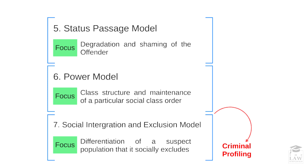The sixth model, the power model, is based on the class structure and maintaining a particular social class order. It must be noted that these models are not implemented in their entirety — it is not a literal implementation. These are just aspects of criminal justice processes that can be seen, and there might be instances where there is a mixture or amalgamation of each of these characteristics. The final model focuses heavily on profiling the criminal, differentiating the suspect population based on social exclusions.